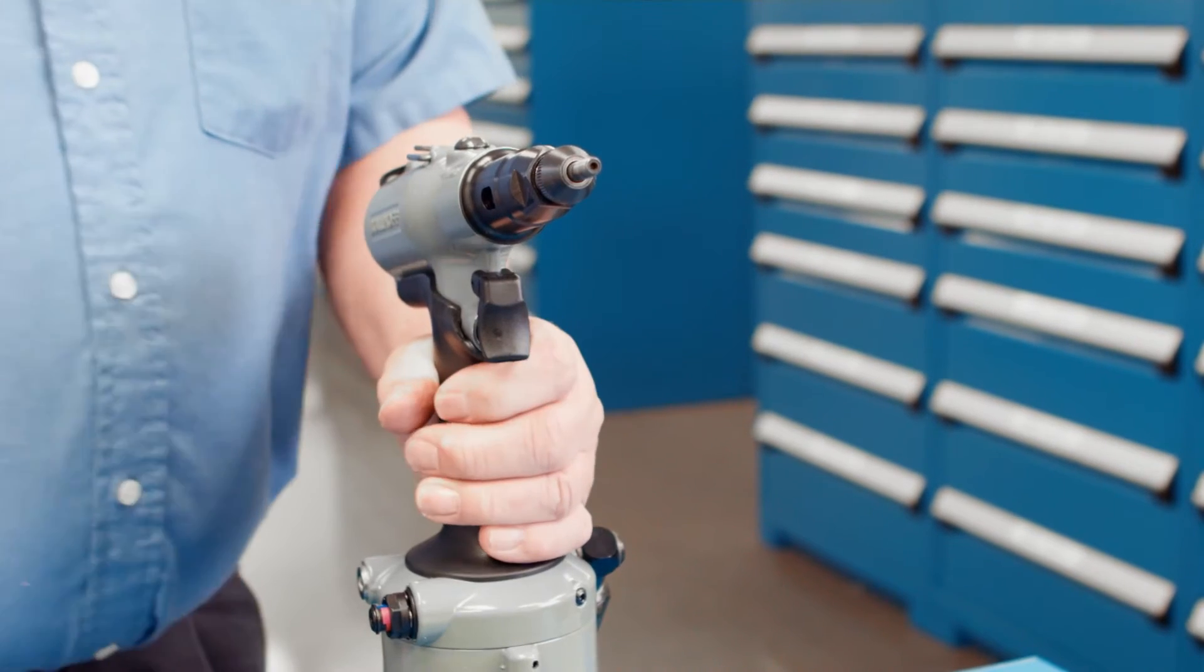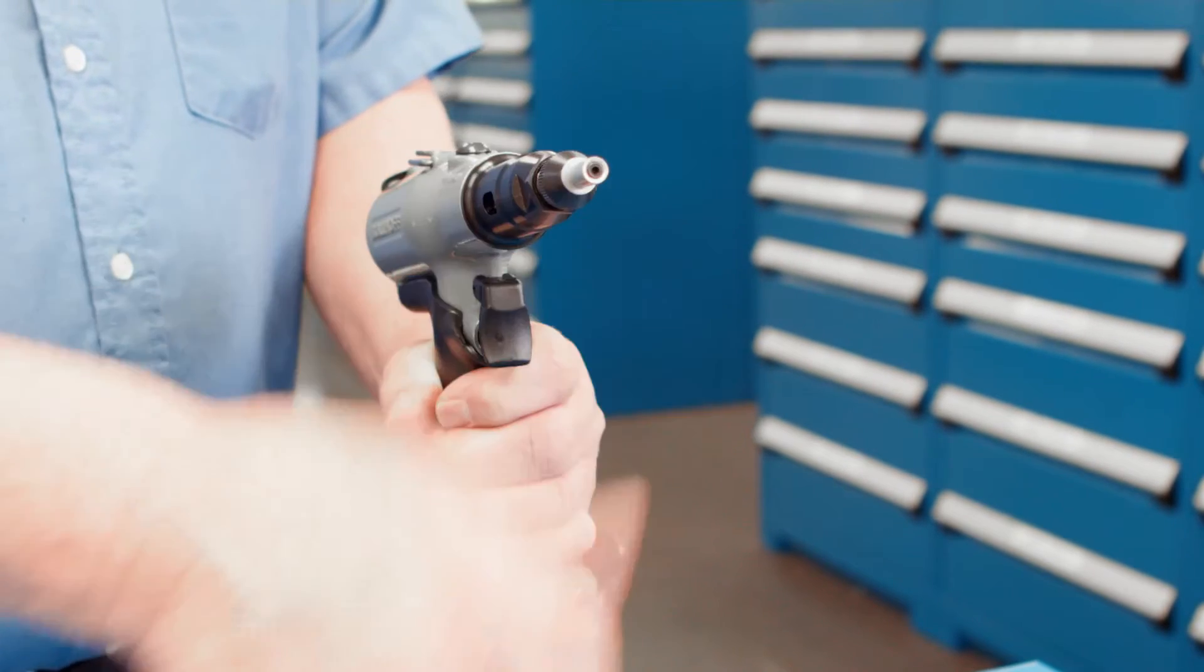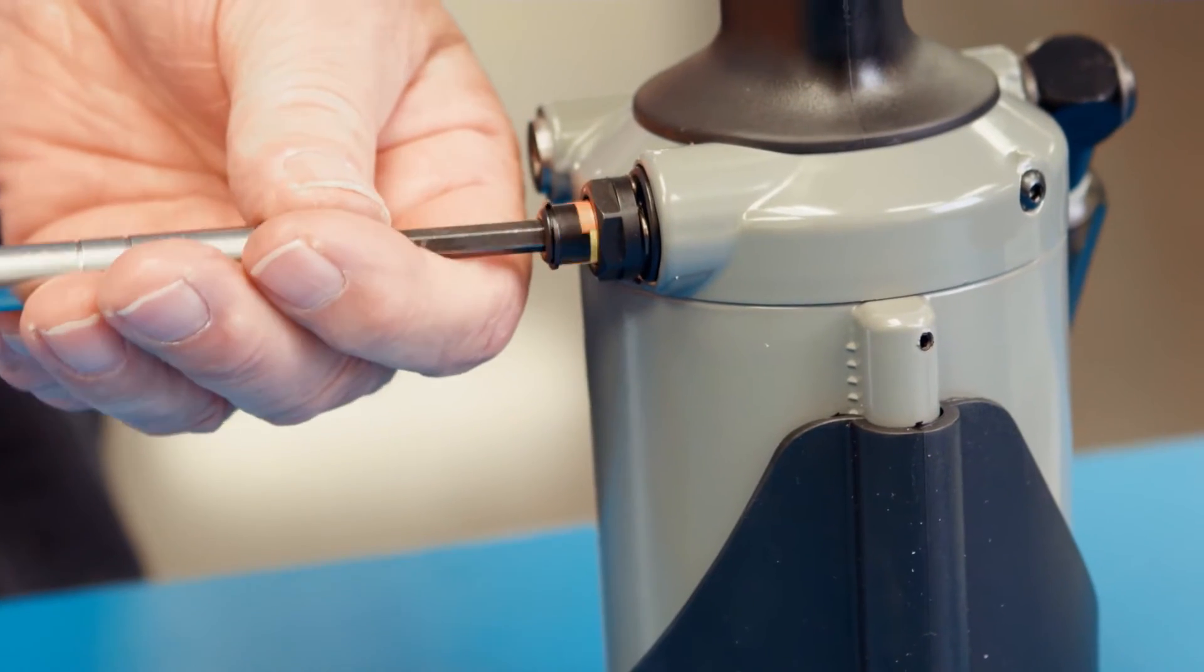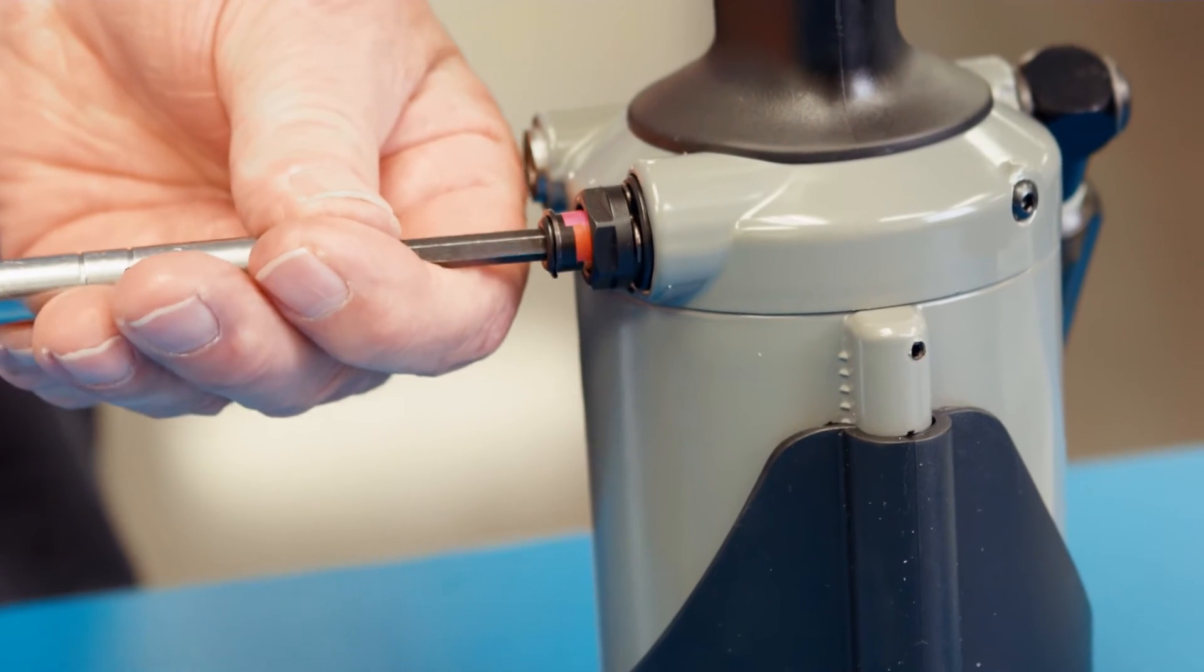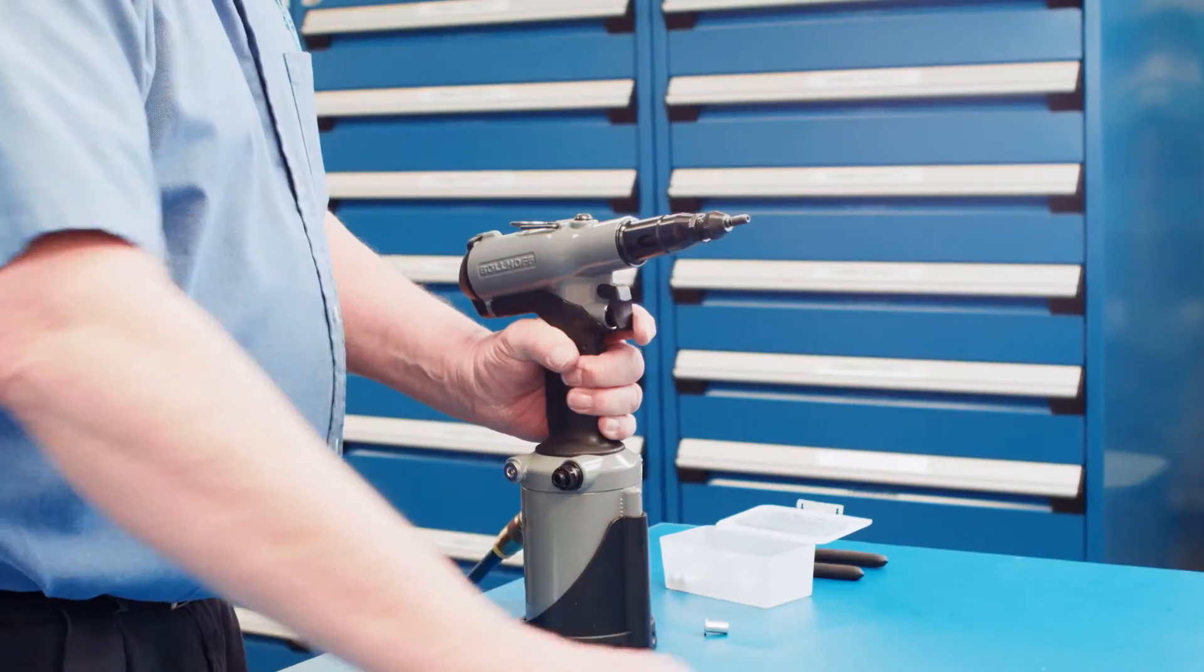Install the rivnut on the mandrel using the quick start feature that automatically threads the fastener on the mandrel. If the fastener does not upset correctly, turn the pressure regulator clockwise two clicks each time until it properly upsets your rivnut.